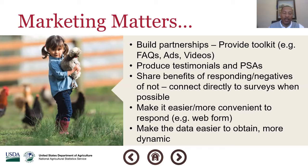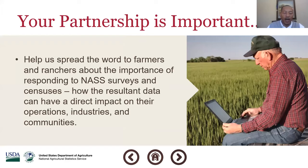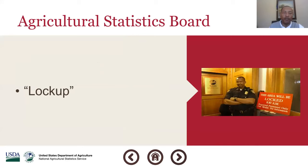The farmers and ranchers are the primary source of information, and we want to make sure we have the information they need to make their decisions. I want to talk about something very unique at USDA — a process called lockup. What is lockup? It's basically a space with a full physical perimeter around the workspace for the purpose of releasing very sensitive market-moving information.